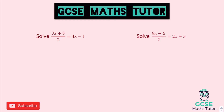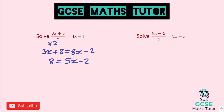For the first one, times both sides by 2 to start with, so we get 3x plus 8 equals 8x minus 2. Get rid of the smallest x from both sides — 3 of them — so 8 equals 5x minus 2. Add 2 to both sides: 10 equals 5x, and divide by 5 — x equals 2.